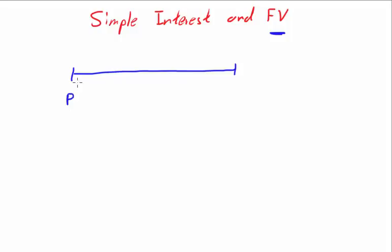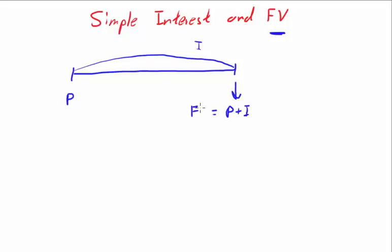Simple interest is basically where you invest principal at the start and you earn interest during the period. As an end result, you have your principal plus your interest — this is called your future value. So principal plus interest is essentially the formula for future value.